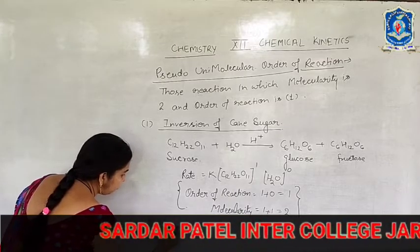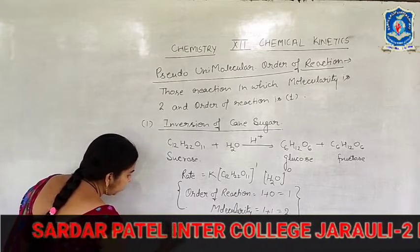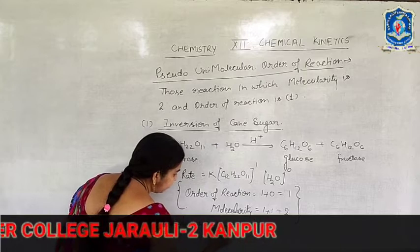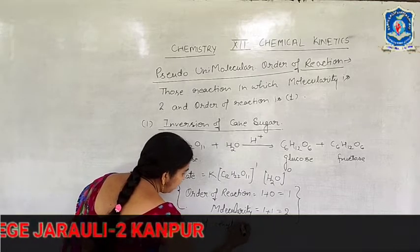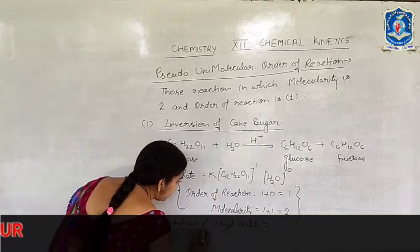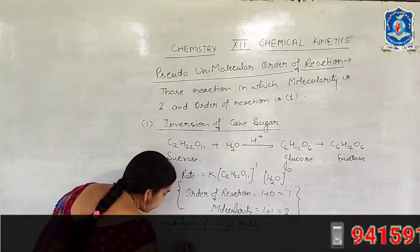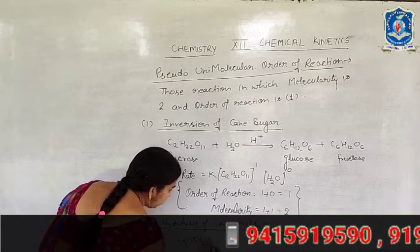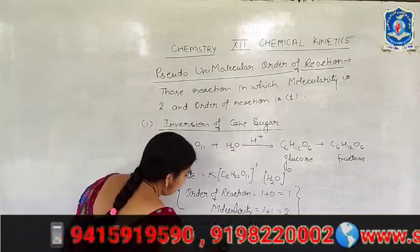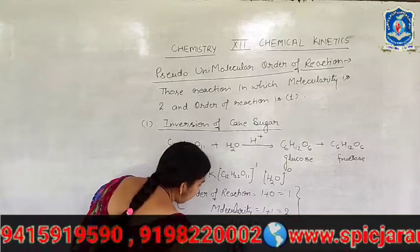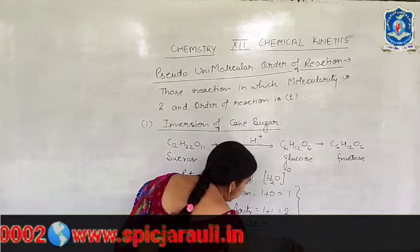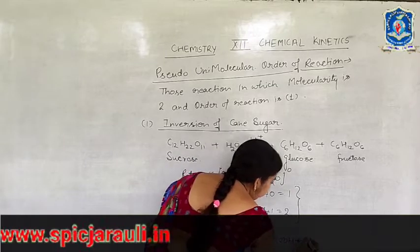The second example is hydrolysis of ethyl acetate. CH3COOC2H5, this molecule is known as ethyl acetate or ester. It can hydrolyse in acidic medium into acetic acid and ethyl alcohol.